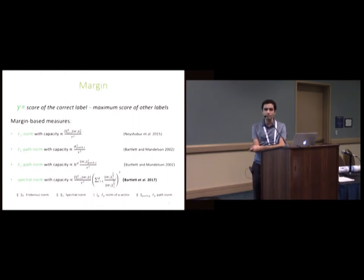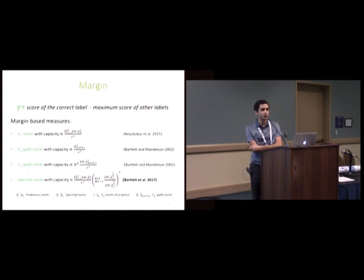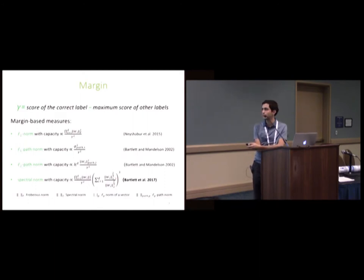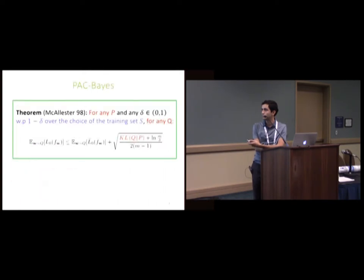When I looked at this bound, which was proved with covering numbers, I was reading about PAC-Bayes and working with David. I realized it was a rather involved proof, but there is a much simpler way to prove it using the same intuition with PAC-Bayes. That's what I'm trying to do here.